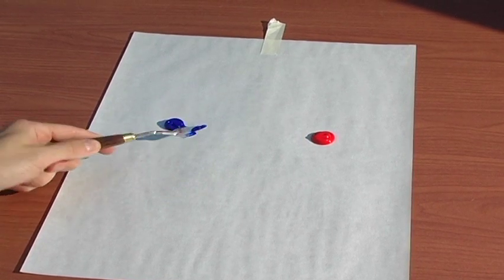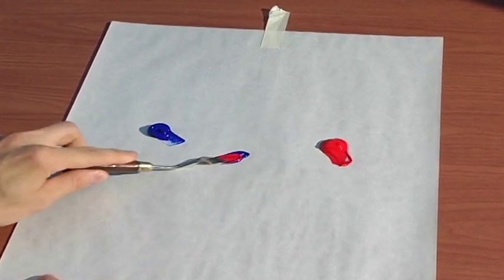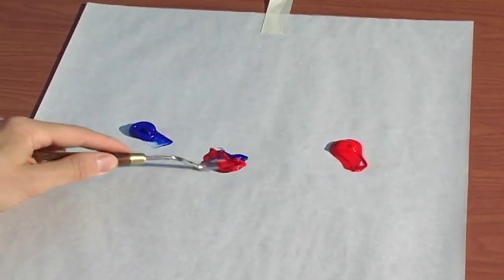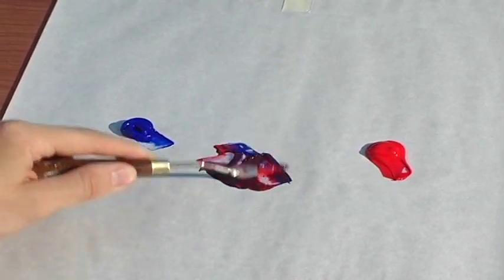I'm going to start off very simply by taking some blue and adding in some red right in the middle here. Then I'm going to start mixing by going back and forth on the palette paper in nice sweeps.